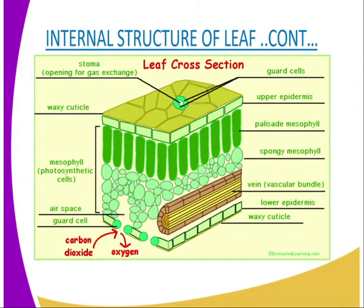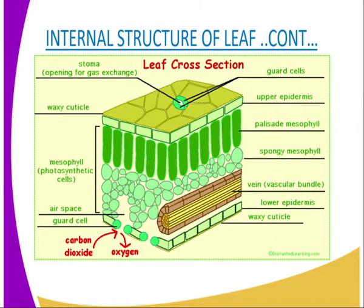We have the lower epidermis, and we have the wax cuticle, which is found on the outer part of the leaf. As you can see, carbon dioxide is getting in while oxygen is getting out through the stoma or stomata — that is how they allow gases in and out of the leaf. We also have the guard cells enclosing the stomata, the airspace, the photosynthetic cells, and the wax cuticle.